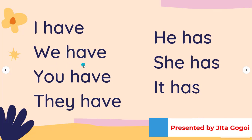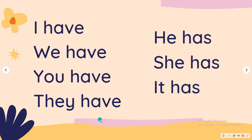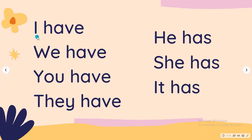We have, you have, they have — but he has, she has, it has. We cannot use have with he, and we cannot use has with we. This is a strict rule in English grammar — we cannot say 'I has' or 'we has'.